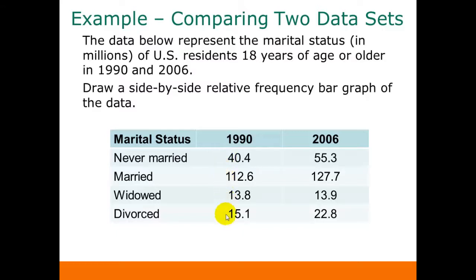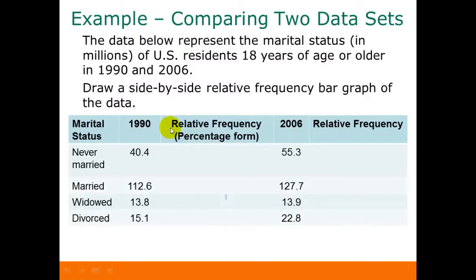Just looking at the raw frequencies, it looks like widowed stayed about the same from 1990 to 2006, but if you consider that our totals are different, that's not really the case. We need to get the relative frequency distributions for both years. The total for 1990 is 181.9 and the total for 2006 is 219.7, so you can see these two totals are quite a bit different.